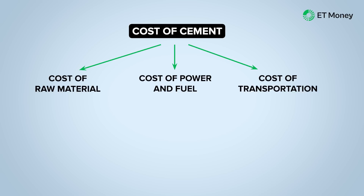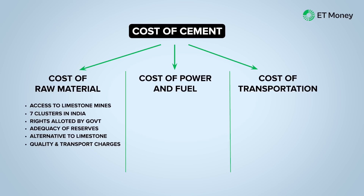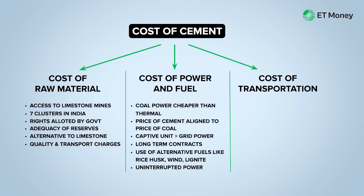There are three main cost elements for the cement industry, each comprising 20–30% of total cost: raw materials, power and fuel, and transportation. Raw materials are centered on limestone — so your ideal cement company should have guaranteed access to limestone mines, which is why cement companies cluster around limestone reserves. Power is the second element; coal-generated power is cheaper than thermal, wind, or solar, which is why it dominates. Cement plants with captive power generation units have lower costs, as captive power is much cheaper than grid electricity.